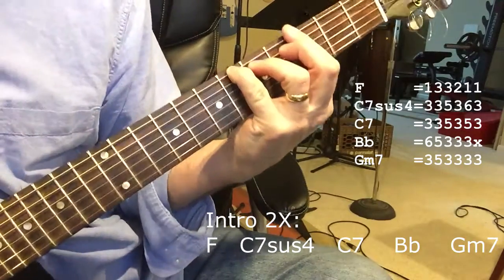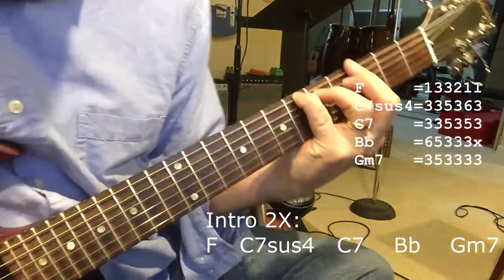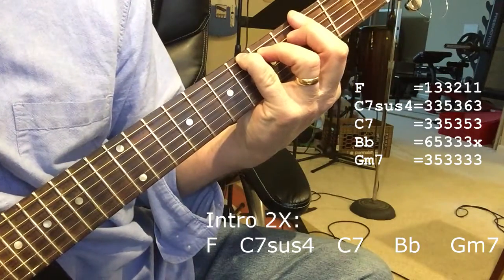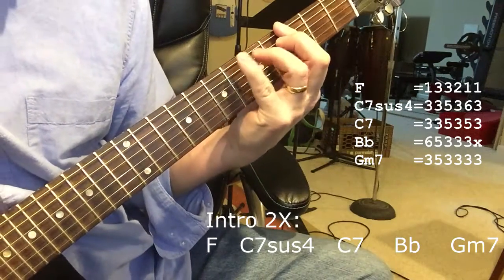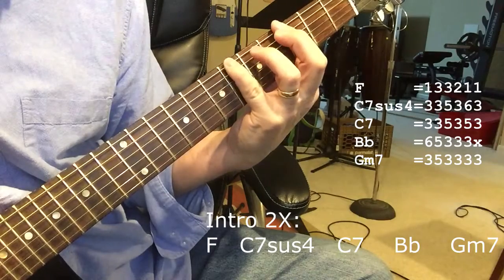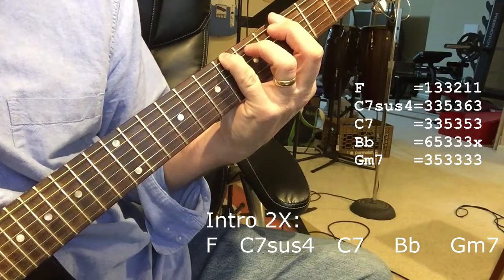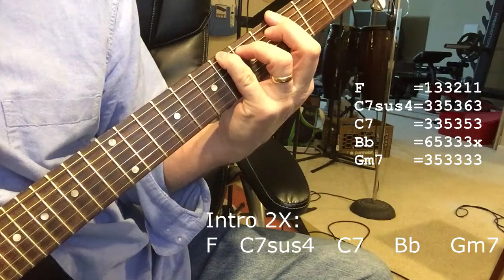And then a B flat to a G minor 7th. Now this B flat, you don't have to play it, but I kind of hear it in there. And that's a B flat here, so it's where you're fretting the E string on the 6th and the A string on the 5th.